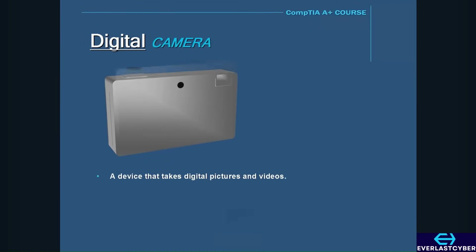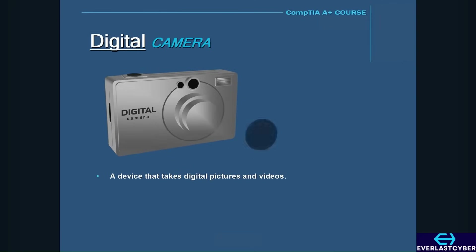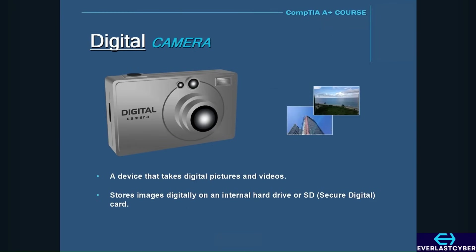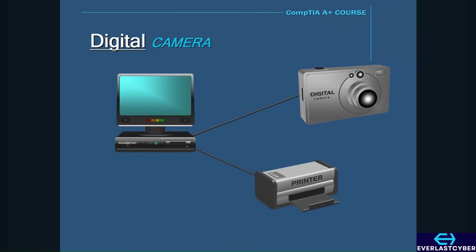A digital camera is a device that takes digital pictures and videos. Unlike standard cameras where images are stored on film, a digital camera stores images on an internal hard drive or on the camera's SD card. Once stored, the images can be downloaded to a computer using a USB cable or SD card, and then viewed or printed.